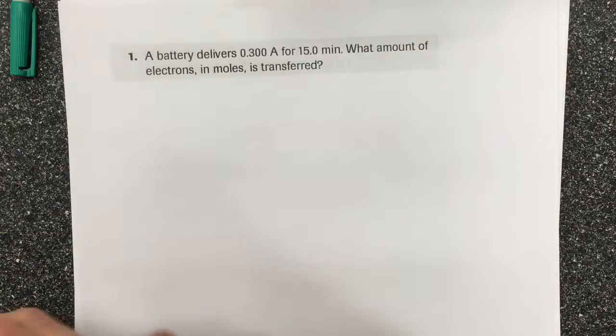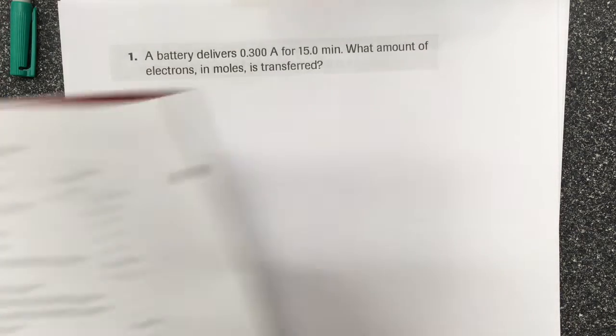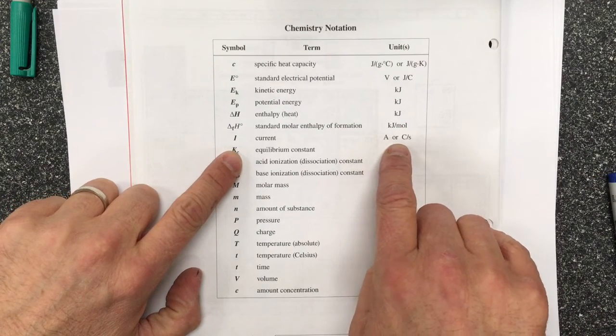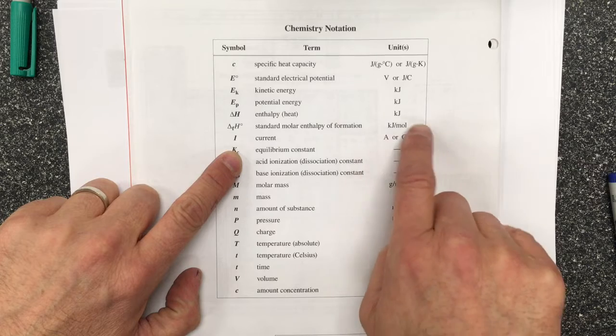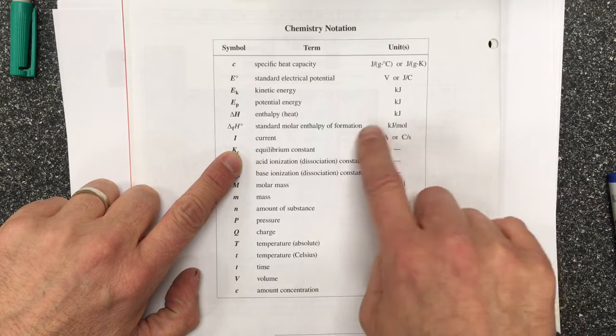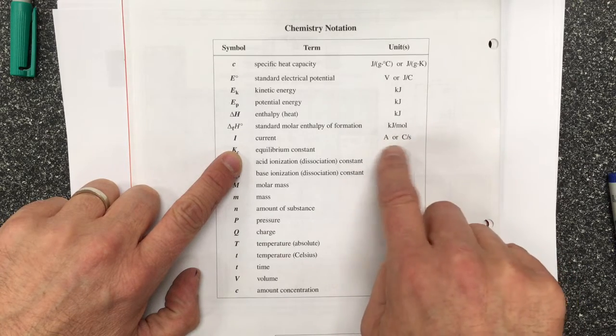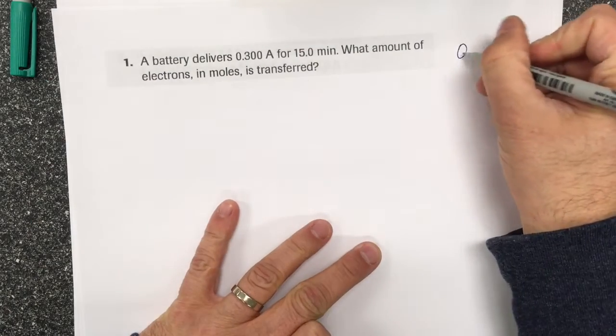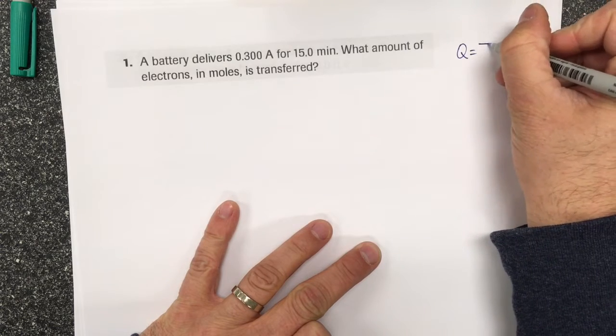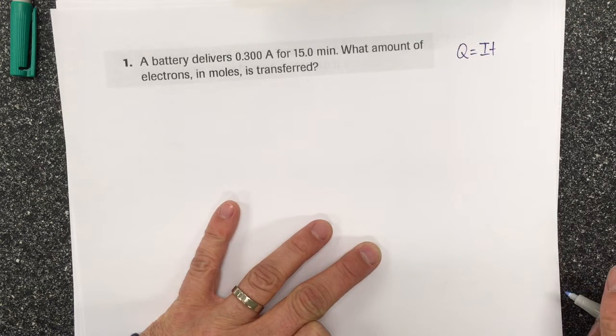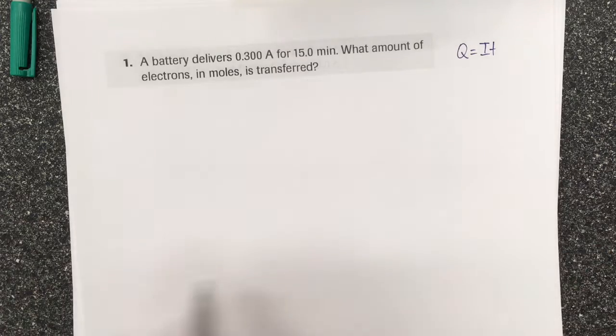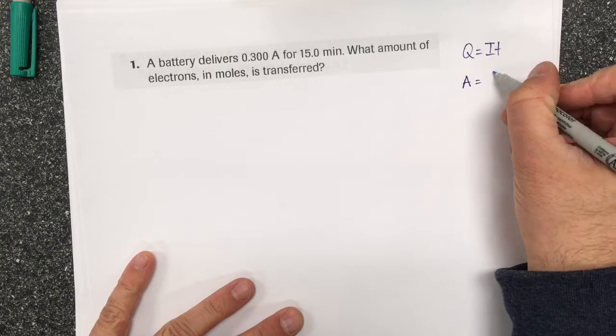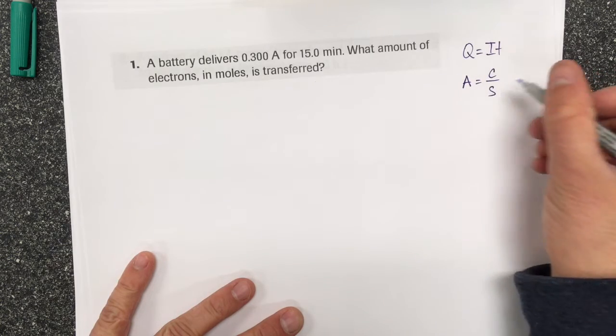Now in order to do this we need to see a few relationships. In your data booklet it'll tell you that amps are coulombs per second. This actually is hinting at a relationship which is that the charge, or Q, equals current times time in seconds. So if I look at that again, it said that amps are coulombs per second. An amp is equal to coulombs or charge per second which is time.